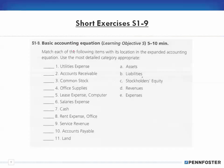Exercise 1-9 says: match each of the following items with its location in the expanded accounting equation using the most detailed category appropriate. Remember, the expanded accounting equation is: assets equals liabilities plus equity plus revenues minus expenses minus dividends.